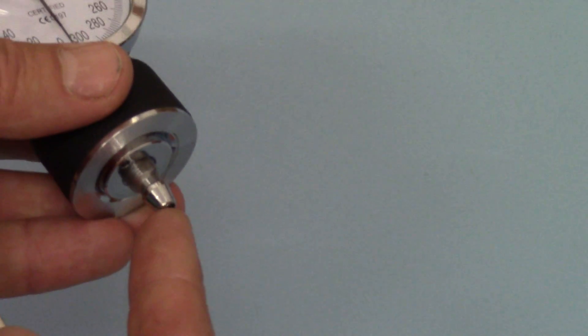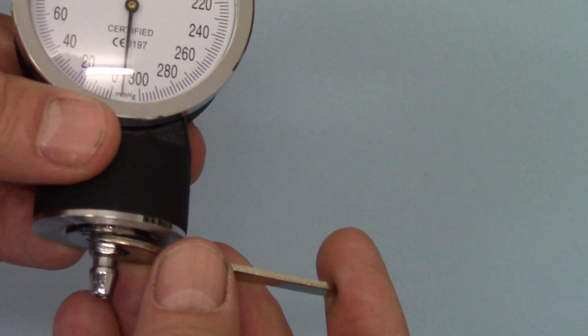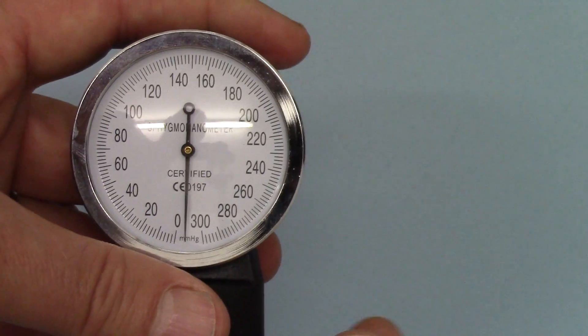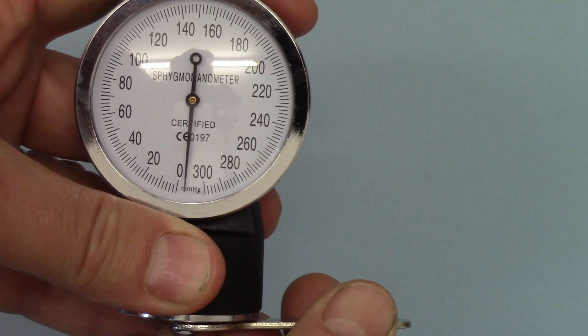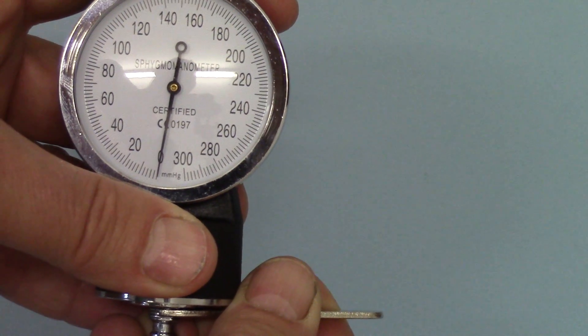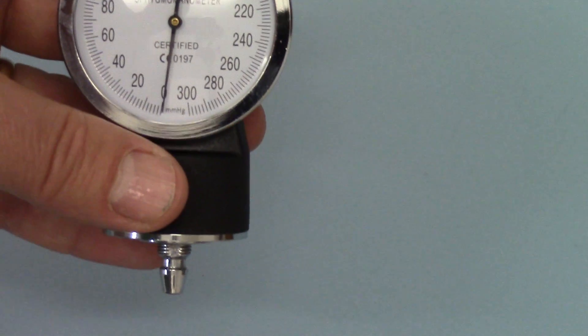At the base where you connect the tube and before you connect the tube there's a little flange where this fits just snug on the base of the aneroid unit and to adjust it it's just a very gentle movement one way or the other until you're happy that it's sitting exactly on zero and when it is it should stay there.